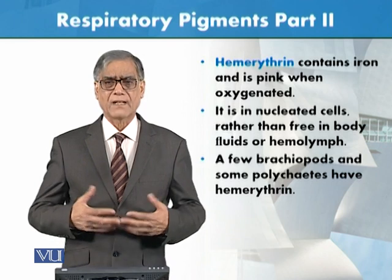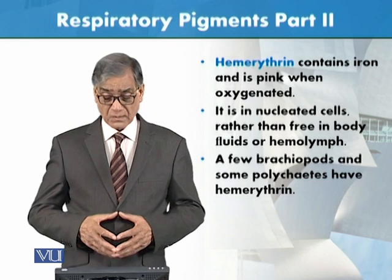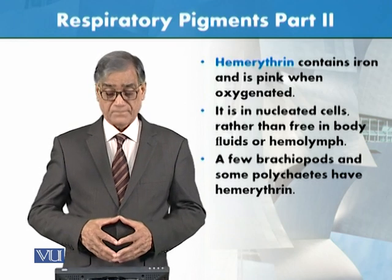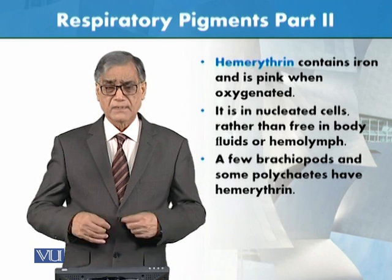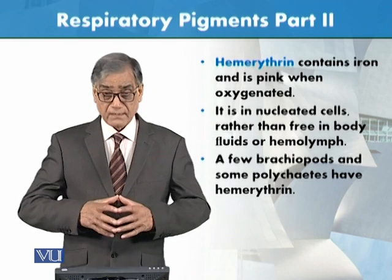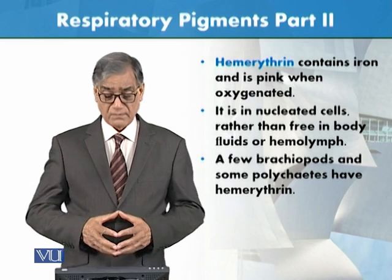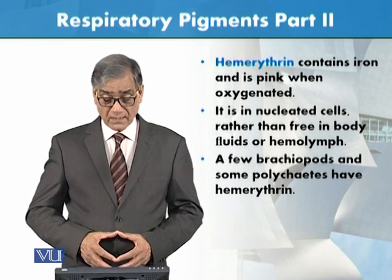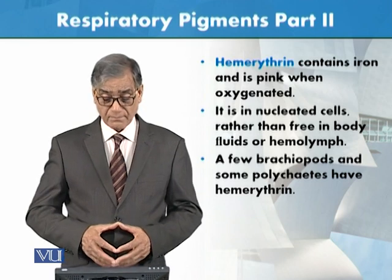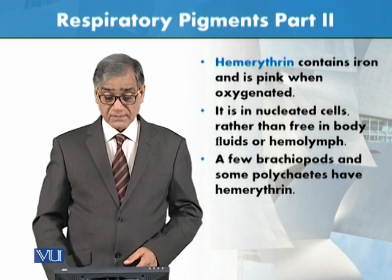This pigment is present in nucleated cells. Some polychaetes also have this pigment. It is a respiratory pigment found in the cells of certain invertebrates including some polychaete worms.